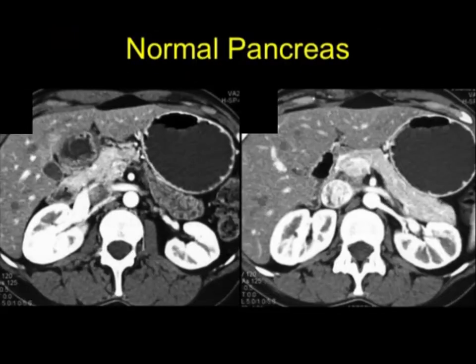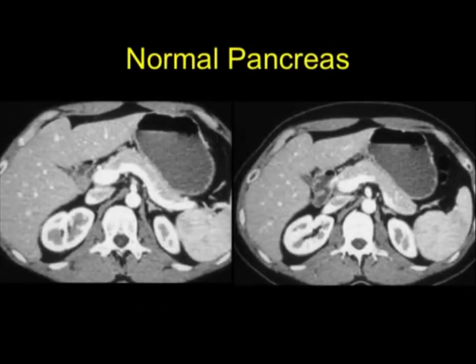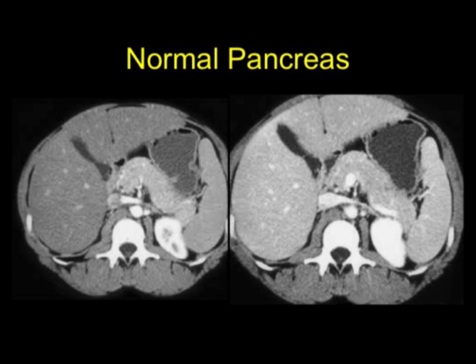When you look at the normal pancreas, it does enhance. On arterial venous phase imaging at around 50 to 60 seconds, there's very nice brisk enhancement of the pancreatic gland. As patients get older, enhancement may be a bit less. In younger patients, the gland is a bit larger and enhancement is greater. The head is a bit larger than the body, which is slightly larger than the tail. Typically you do not see the pancreatic duct, though with high-resolution scanners you often can — it measures one to two millimeters.